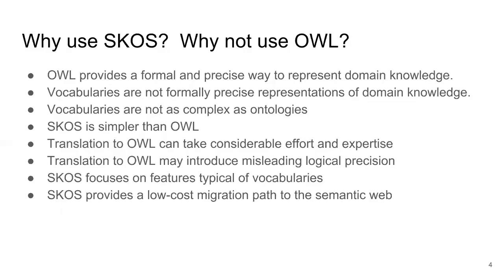OWL provides a formal and precise means of representing domain knowledge. OWL enables a great deal of detail to be recorded about a knowledge domain, including rules and axioms, all of which in combination provide a basis for complex computer-based reasoning. Creating an ontology using OWL can involve quite a bit of work and can take considerable domain expertise. Controlled vocabularies are not necessarily formally precise representations of domain knowledge. Rather, they are more like informal structures reflecting the intuitive knowledge of human users in a form useful for resource discovery. It can take considerable work to translate a vocabulary to OWL.